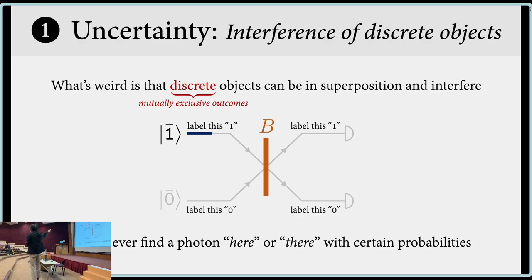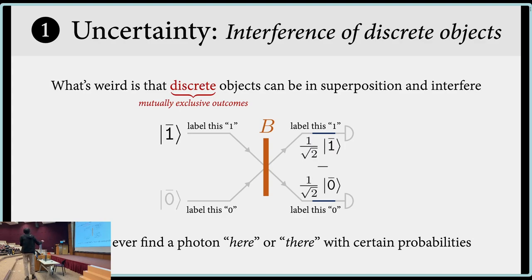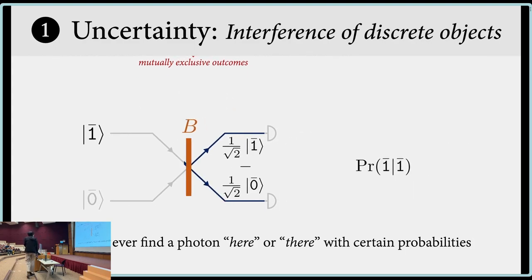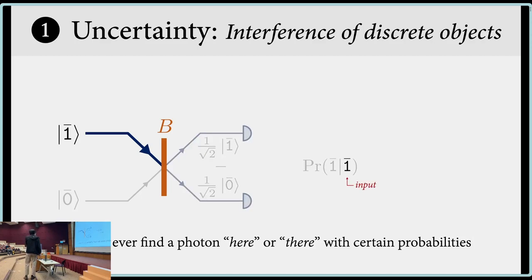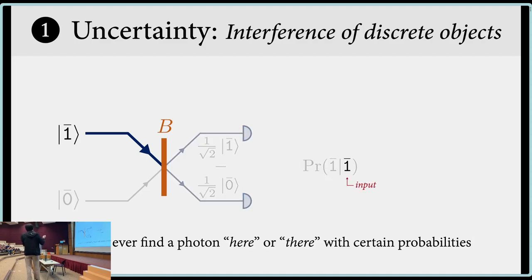Or you can start with the photon in the upper part, which means you prepare the state photon in state one. You do something to the photon with the beam splitter and you get another state — this time you get one over root two of one, minus one over root two of zero. But again, you only ever find the photon in one of the two parts. When you look at the photon, you either find it above or below. This is the probability of, given that your input is one, what is the output.